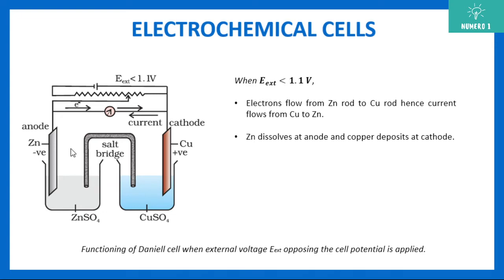You can see that zinc, which is negatively charged, is the anode, and copper is the cathode. The current always flows from copper to zinc in this direction, while electron flow is from zinc to copper. There is also an external potential applied.